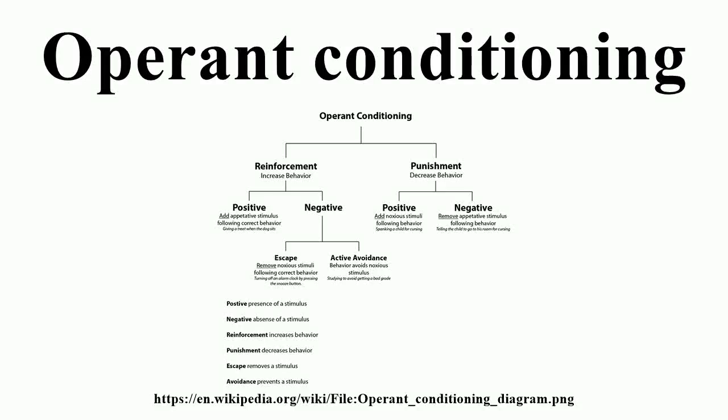Operant conditioning is a learning process in which behavior is sensitive to, or controlled by, its consequences. For example, a child may learn to open a box to get the candy inside, or learn to avoid touching a hot stove.